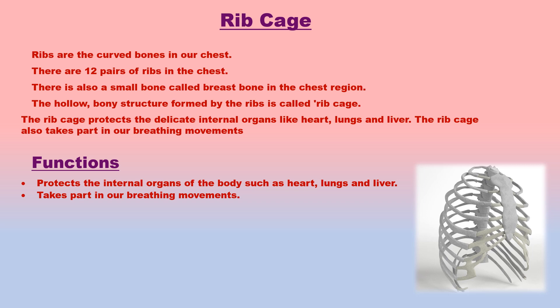Ribs are the curved bones in our chest. There are 12 pairs of ribs. One end of all the ribs is joined to the backbone and the other end is joined to the breast bone. In this way, all the rib bones, part of the backbone, and the breast bone join to form the rib cage. The rib cage protects delicate internal organs like heart, lungs and liver, and also takes part in our breathing movements.